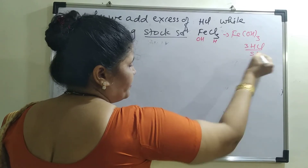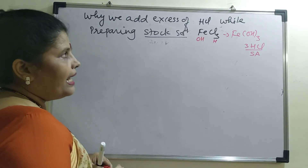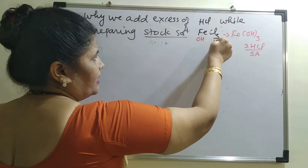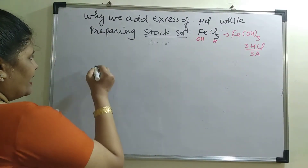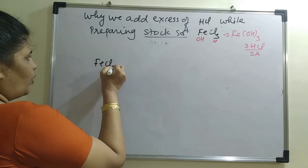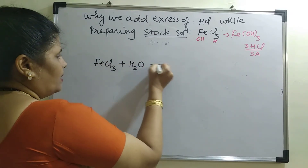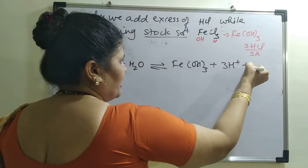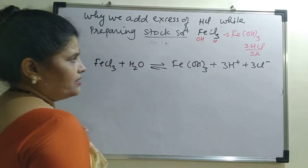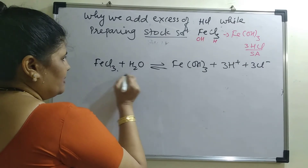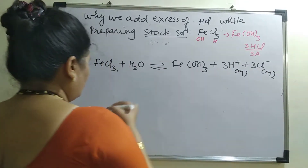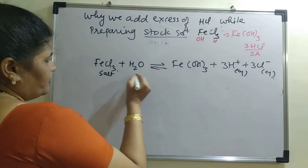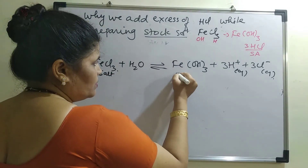HCl is a strong acid, so the pH will be less than 7, and we add an acid accordingly — in this case HCl. When FeCl₃ is added to water, what we get is Fe(OH)₃ plus 3H⁺ plus 3Cl⁻, all in aqueous state. FeCl₃ being a salt dissociates ionically, and Fe(OH)₃ is the turbid component.